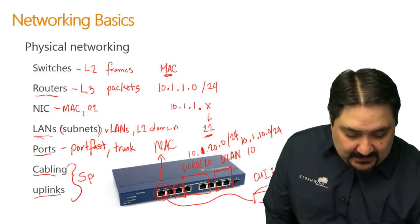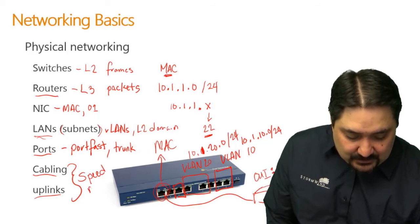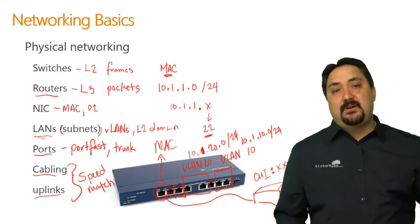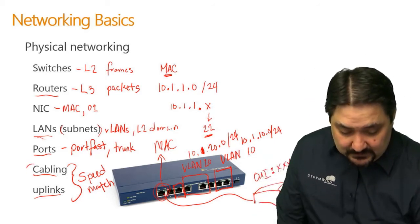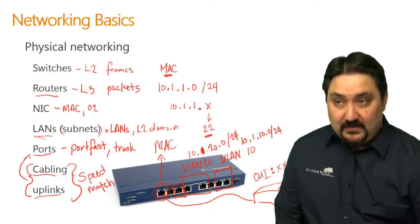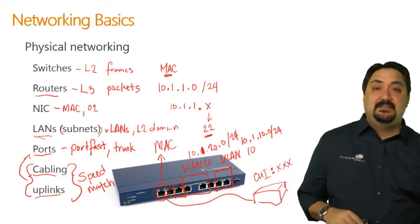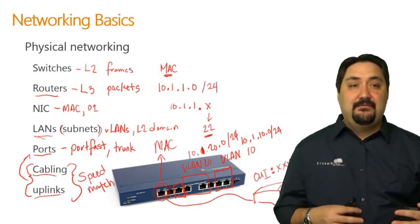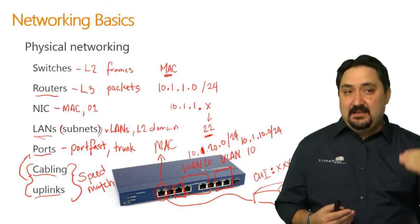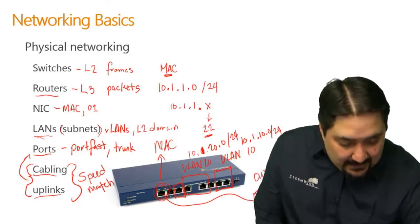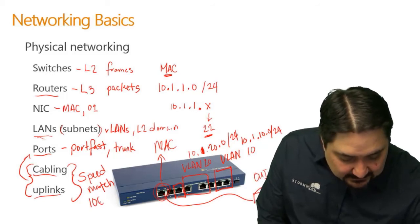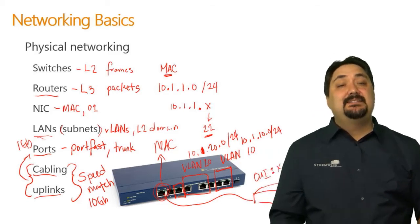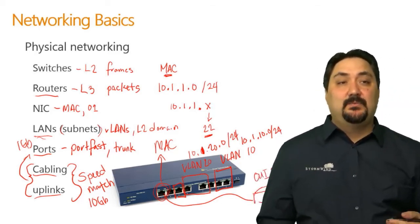Next up, we have our cabling and uplinks. In our physical environment, what we're really looking for is a speed match — we want to make sure the speed of the cabling matches the speed of our uplinks and the speed of our ports. If any one of these items is speed-limited — let's say everything is 10 gigabit but one port is 1 gigabit — you are not going to be able to run at 10 gigabit speeds.